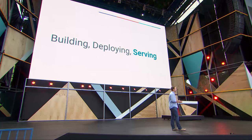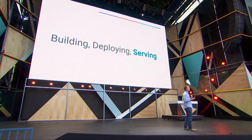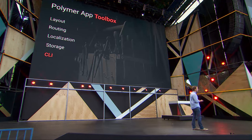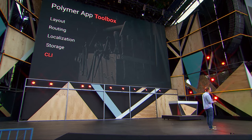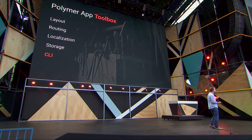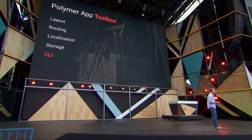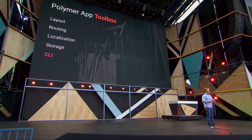So now that we're armed with the PRPL pattern and we've built our app, how do we apply it to our own progressive web app that we're building with the app toolbox? There are a lot of different tools for building and optimizing component-based applications. We wanted a maximally simple tool to make it easy to get started building an application using this pattern, to develop, and then ultimately to build and deploy it. So we built the Polymer CLI — the Polymer command line tool.